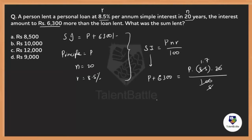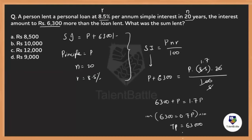This gives us: 6300 + P = 1.7P. So 6300 = 0.7P. Multiplying both sides by 10: 63000 = 7P, which gives P = 9000. So the principal sum lent is ₹9000.